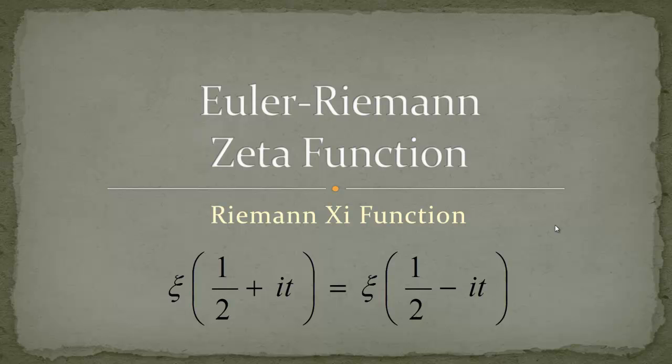The ξ function is a very special function that was introduced by Riemann, as the name shows you it's Riemann ξ function, while working on the zeta function itself. And the most important part is that the ξ function just follows this functional equation of ξ of 1/2 plus it equals ξ of 1/2 minus it.